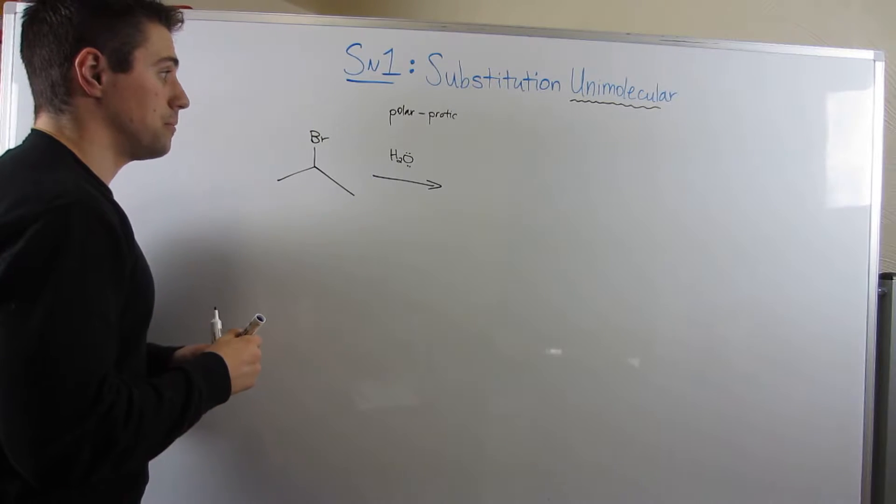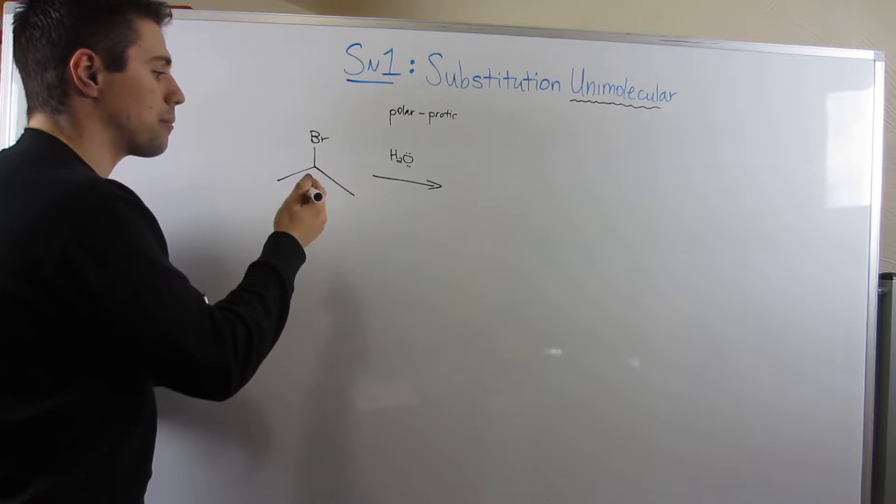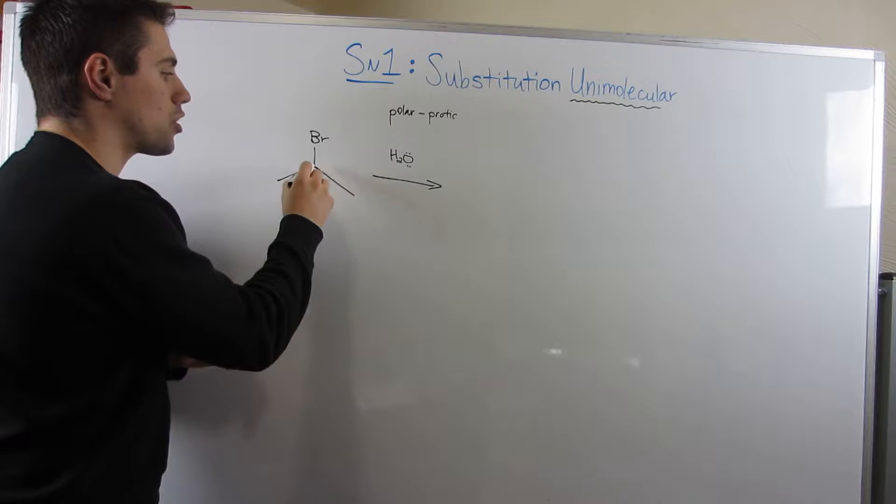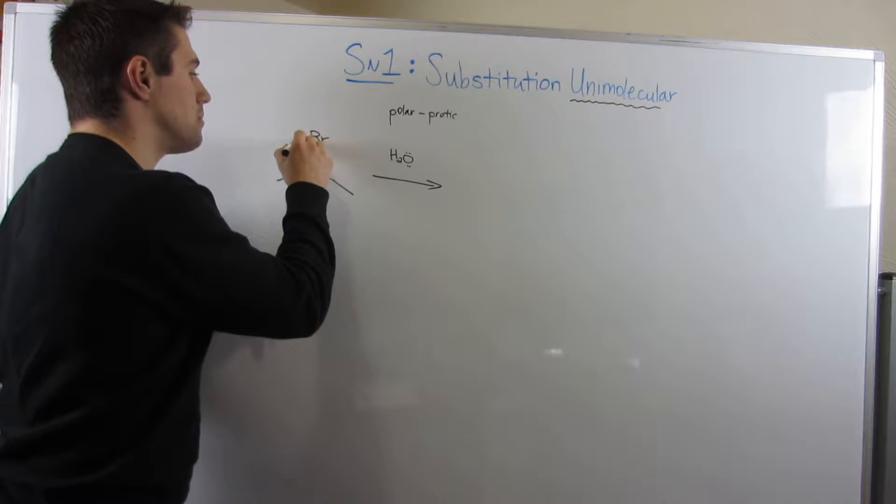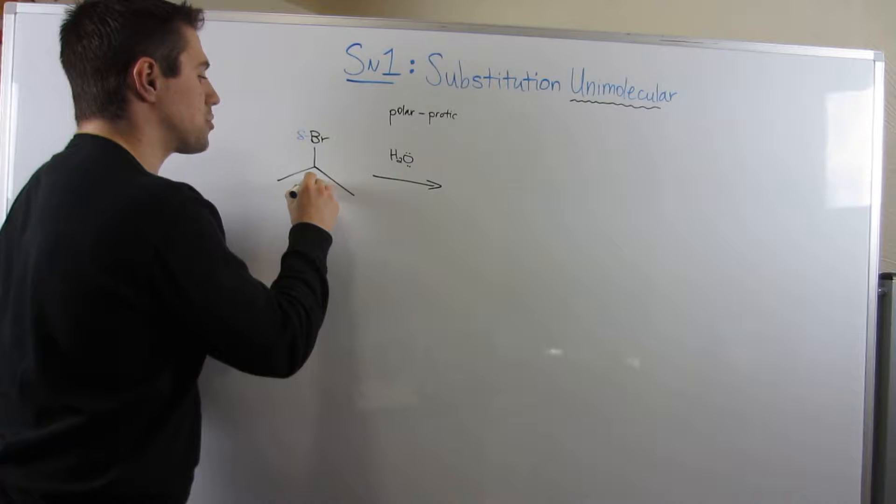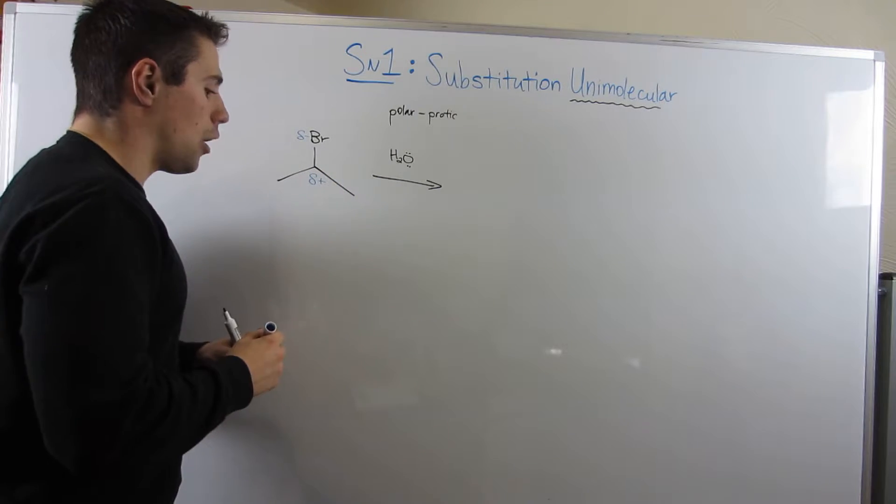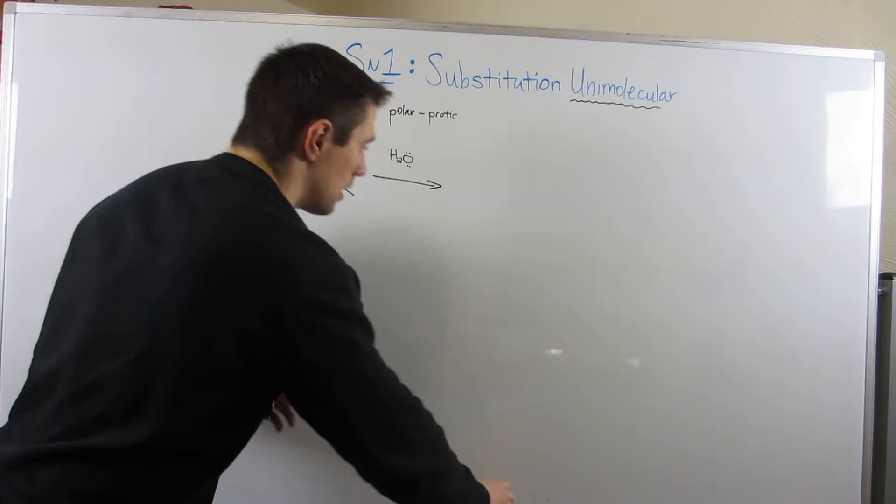So here's kind of what's going to happen. Water being polar protic, and this bromine - remember, this bond right here between this carbon and this bromine, there's a delta minus on the bromine, and there's a delta plus on the carbon.